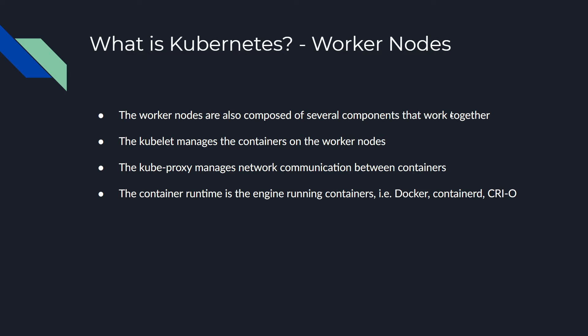Moving on to the worker nodes — worker nodes are much simpler because they just do work. They're composed of three parts. The main part is the kubelet, which communicates with the control plane to get containers onto the worker nodes. If you're Googling for troubleshooting Kubernetes issues, you'll often hear people talking about the kubelet — that's the core of what gets your containers running. Next is the kube-proxy, which manages communication between containers, handling things like DNS and service discovery.